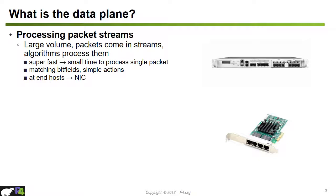Different data plane implementations run in different devices. For example, if there is a data plane running at the end host, this is typically run in a network interface card, also called a NIC. If it runs inside a network, it can run at different devices such as routers, switches, or firewalls, which also process the packets.